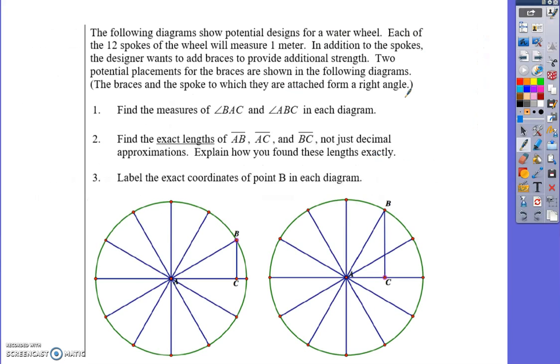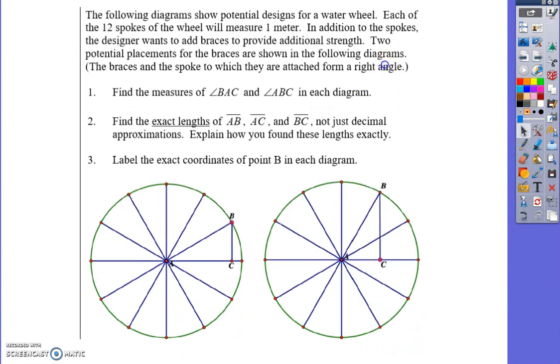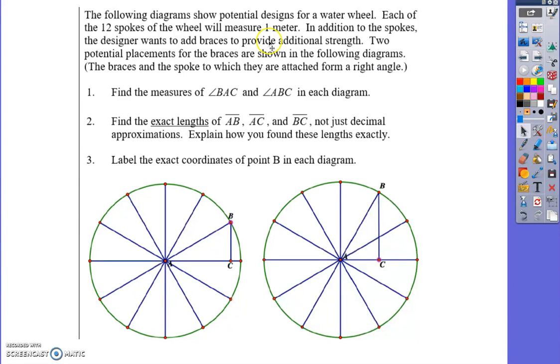This is a design for a potential water wheel. Each of the 12 spokes of the wheel will measure one meter. Why are we choosing one meter? Because of the unit circle - we're trying to introduce you to the unit circle through the use of water wheels.